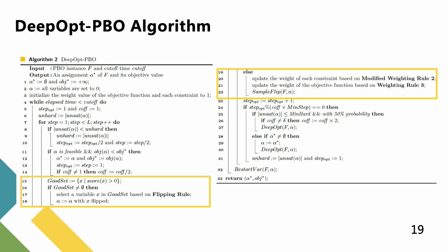The algorithm uses good set to store variables whose score is larger than 0. If good set is not empty, the algorithm flips a candidate variable based on the proposed flipping rule. Otherwise, it means that the algorithm is trapped into local optimum.